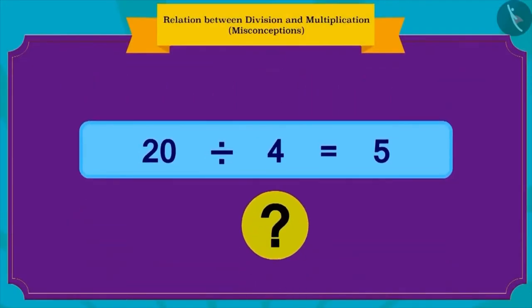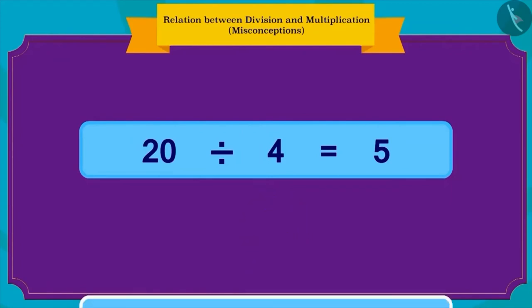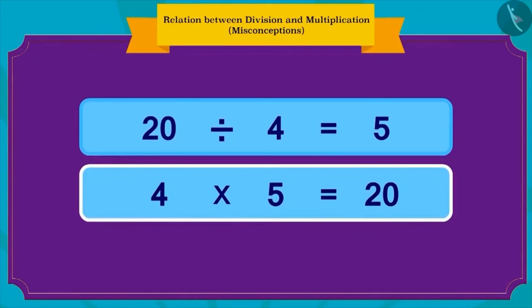Children, how can we write this in terms of multiplication? Absolutely correct. This is the way in which we can write it in terms of multiplication. Four pencils, and each pencil costs five rupees. So, the total is twenty rupees.